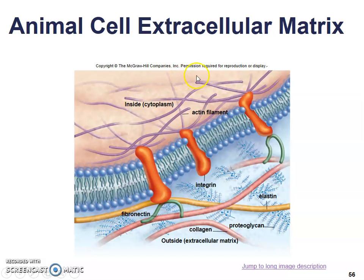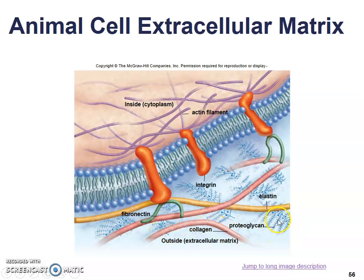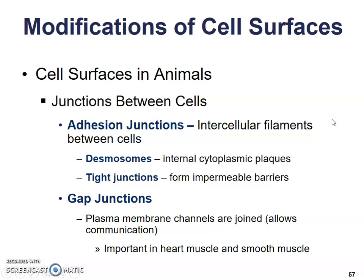Inside the cell, all of its cell processes are occurring. Here is our phospholipid bilayer with our proteins. Here we have fibronectin, keeping things nice and flexible and resilient. Here we have collagen. Proteoglycan — 'glycan' meaning sugar, 'proto' meaning protein — so it's a mixture. And we've got some elastin as well.